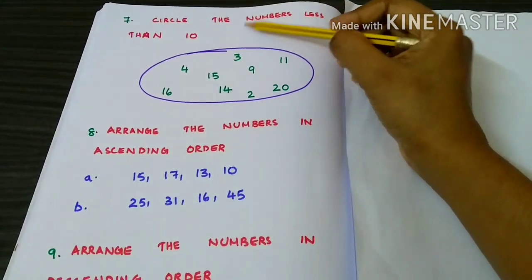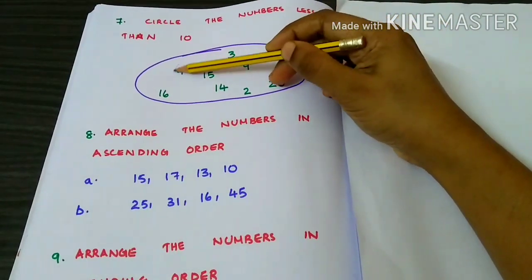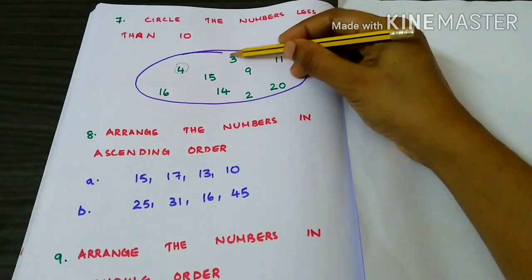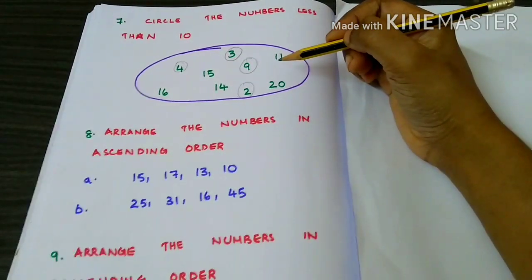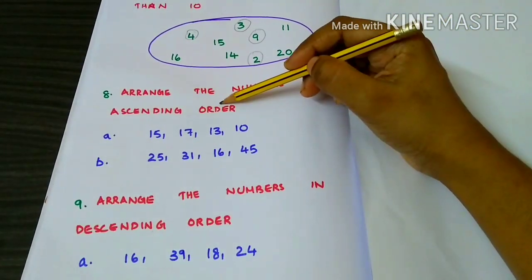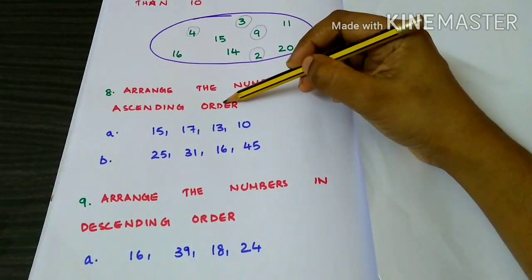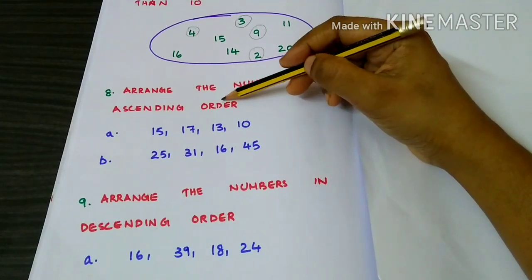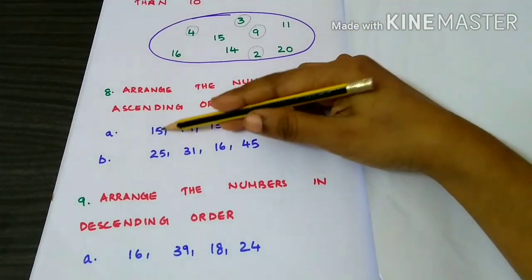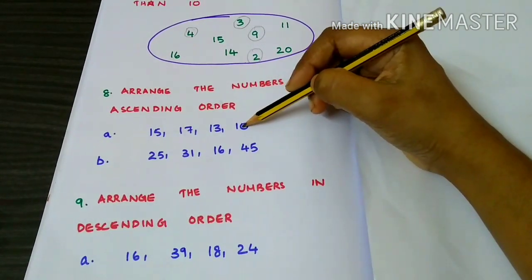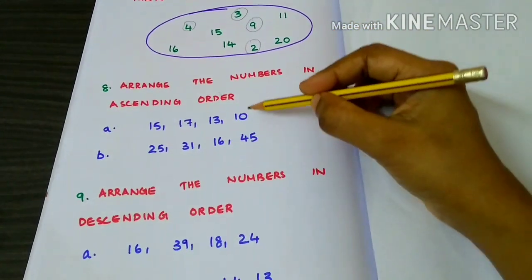Circle the numbers less than 10: 4, 3, 9, 2. Arrange the numbers in ascending order. Ascending order means small to big numbers. We have to arrange the numbers from small to big: 15, 17, 13, 10. First, we have to identify the smallest number — it is 10.